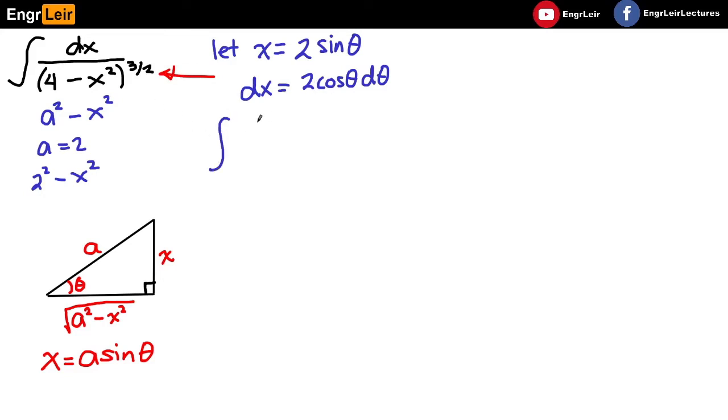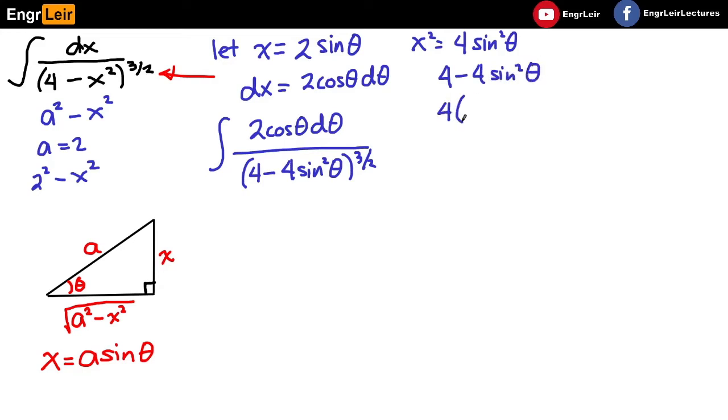So, dx becomes 2 cosine theta d theta. And then, we have x squared diba? That is 4 sine squared theta. So, we have at the bottom, 4 minus 4 sine squared theta raised to 3 over 2. And then, we do some algebra doon sa baba, realizing that 4 minus 4 sine squared theta is 4 times 1 minus sine squared theta.